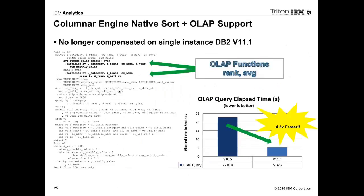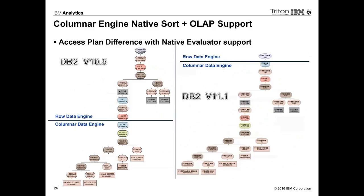The next example shows OLAP function performance. This is a complex OLAP function with average over a partition and ranking over partitions, and performance is significantly faster — about four times. In version 10.5, a lot of work was done in the row engine for summarization and ranking. In version 11, we've pushed all of that down into the BLU columnar engine — the only thing left to do in the row engine is to return results in row format. This push-down of the CTQ to higher up in the execution plan makes a huge difference.